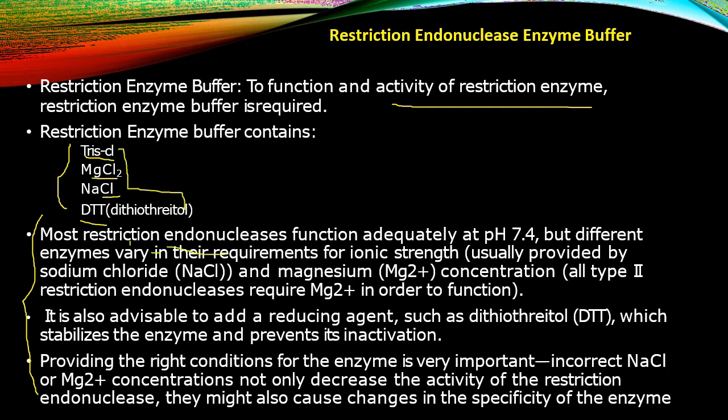Most restriction endonuclease enzymes function adequately at pH 7.4, but different enzymes vary in their requirements for ionic strength, usually provided by sodium chloride, which has strong ionic strength. All Type II restriction endonuclease enzymes require Mg2+ in order to function.